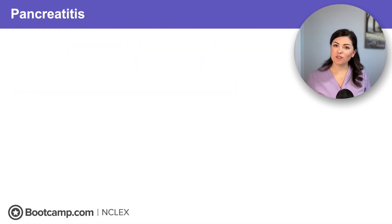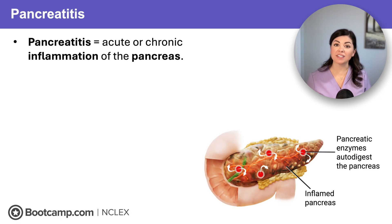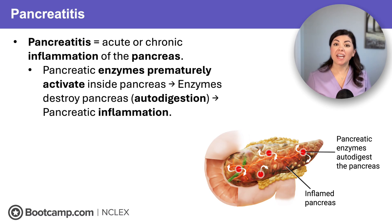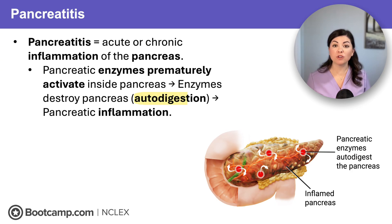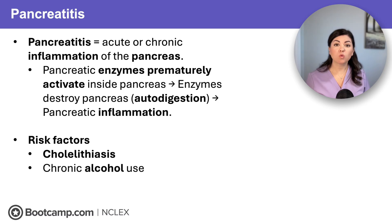Now let's switch to pancreatitis, which is inflammation of the pancreas that can be acute or chronic. Pancreatic enzymes activate inside the pancreas instead of the intestines, causing autodigestion — the pancreas literally starts digesting itself. Common causes include cholelithiasis or gallstones, chronic alcohol use, and even the ERCP procedure we just discussed.